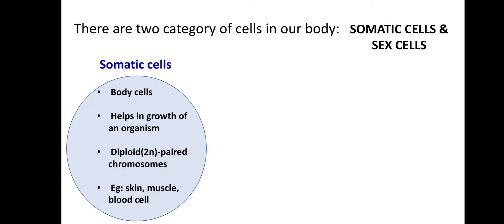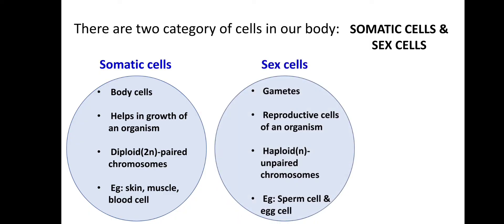Somatic cells have paired chromosomes and help in the growth of the organism. The second type of cell is sex cells, or reproductive cells, which are called gametes. The male gamete is sperm, and the female gamete is the egg. They help in the reproduction of an organism.